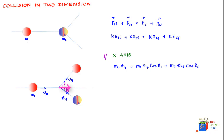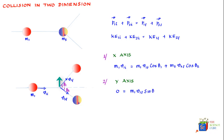For conservation of momentum along the y-axis: the momentum along y before the collision is zero, because the ball was moving only along the x-axis and m2 was stationary. After the collision, the y-component momentum of m1 is m1 v1 final sin(theta1), and for m2 it is m2 v2 final sin(theta2). These are equal and opposite, so we write m1 v1 final sin(theta1) minus m2 v2 final sin(theta2) equals zero.